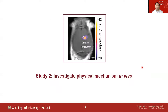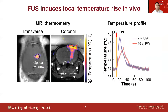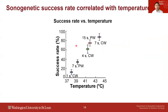We then evaluated the physical mechanisms behind TRPV1-mediated sonogenetics. To study the thermal effect of ultrasound, we used MRI thermometry to image the temperature rise induced by ultrasound in vivo. These images show the temperature distribution of heat induced by focused ultrasound stimulation. Continuous wave induced faster and higher temperature rise than pulsed wave, consistent with our neuron activation results. We found a strong linear correlation between the neuron activation success rate and the maximum temperature rise induced by different ultrasound parameters.